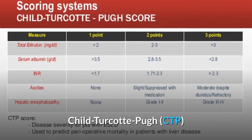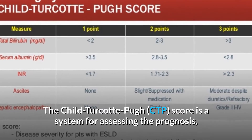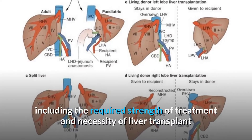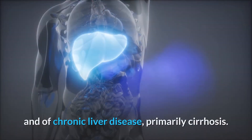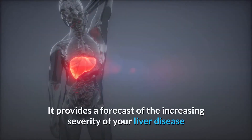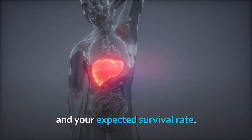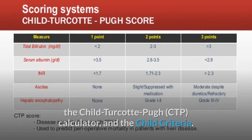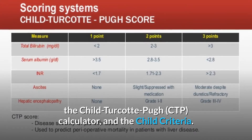The Child Turcotte-Pugh (CTP) score is a system for assessing the prognosis, including the required strength of treatment and necessity of liver transplant, of chronic liver disease, primarily cirrhosis. It provides a forecast of the increasing severity of liver disease and expected survival rate. It's also referred to as the Child-Pugh classification, the CTP calculator, and the Child criteria.